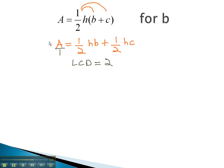We will multiply both sides, every term, by 2. As we do, on the left side we have 2A. On the right side, the 2's divide out, and we're left with hb plus hc.